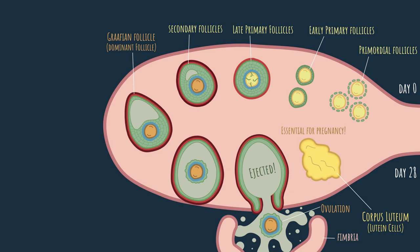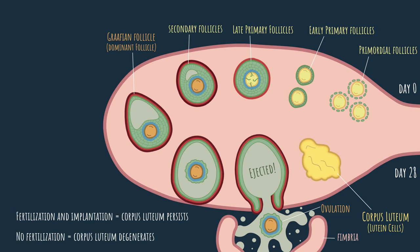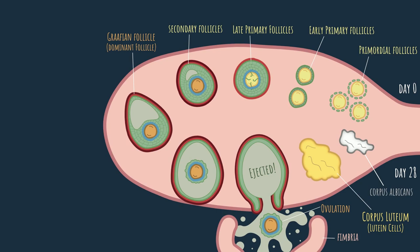It is also important to know that the future of the corpus luteum depends on the event of fertilization. Now, let's explain. In case the ovulated oocyte was fertilized and implanted in the uterus, the corpus luteum will persist and grow bigger and bigger to support the embryo. However, in case fertilization did not occur, which is the more likely option, there is no need for the corpus luteum, so it degenerates and becomes a structure known as corpus albicans, meaning the white body. The structure serves no function, so it will simply disappear over time.